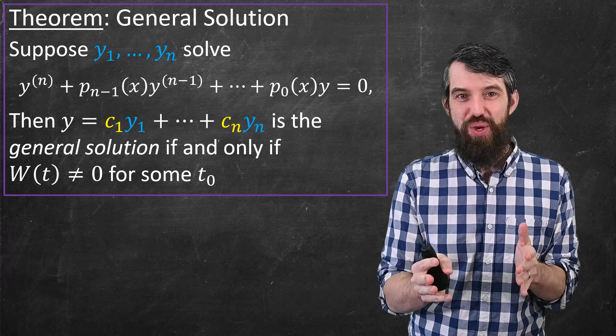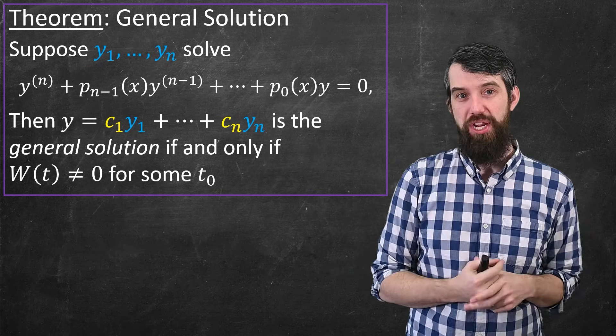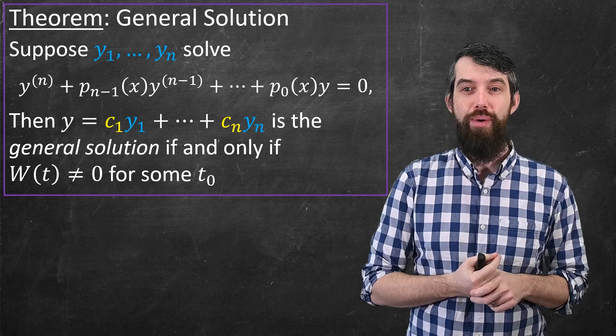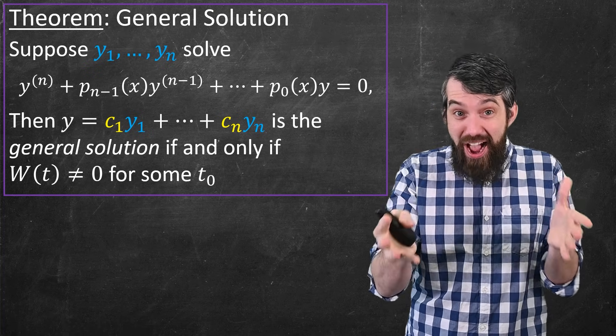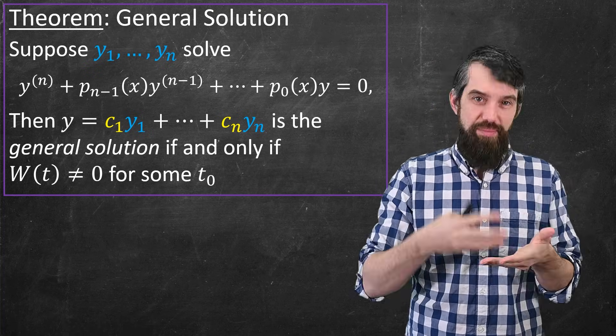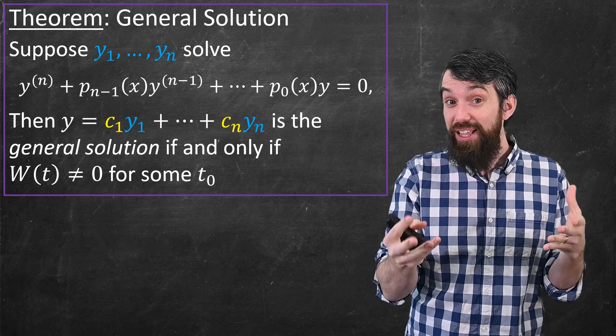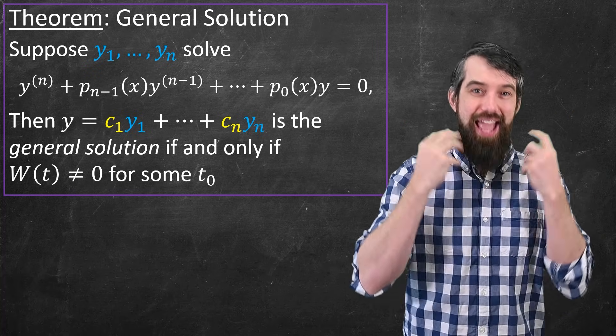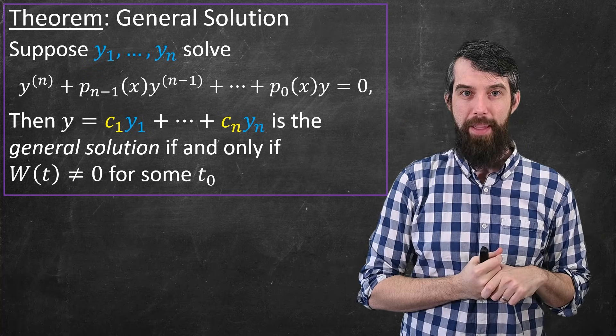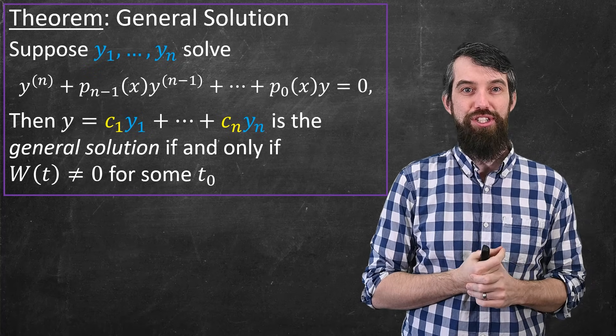So this is really good, because it now tells you when you can stop searching for new solutions to your differential equation. If you find n of them, and you find that those n solutions you've gotten are linearly independent, this is this test we have with this Wronskian. So if you find that you have n linearly independent solutions, that's it. Every other solution can be written in this way. And that means you're done. You've solved your differential equation.